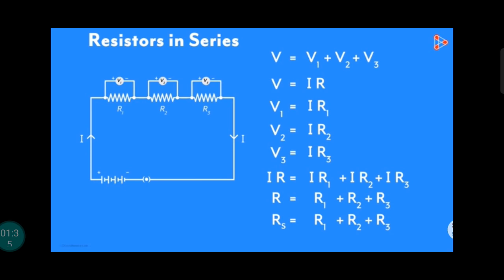The resistors connected in series, RS is equal to R1 plus R2 plus R3. That is, the sum of the individual resistors equals the effective resistance, which always increases. So the resistors connected in series, the effective resistance increases by the addition of three resistors.